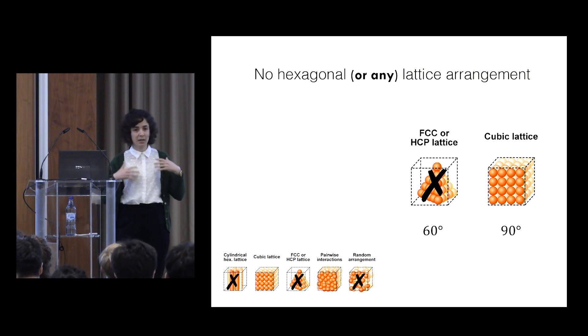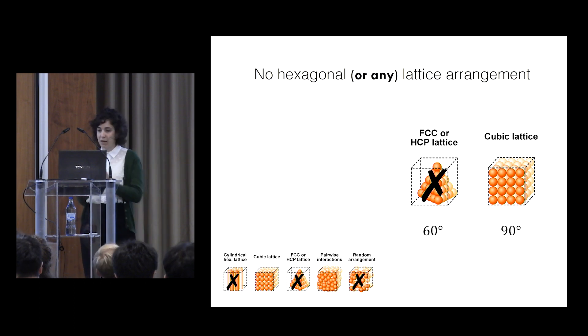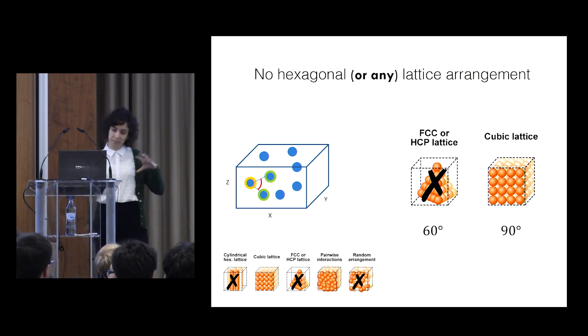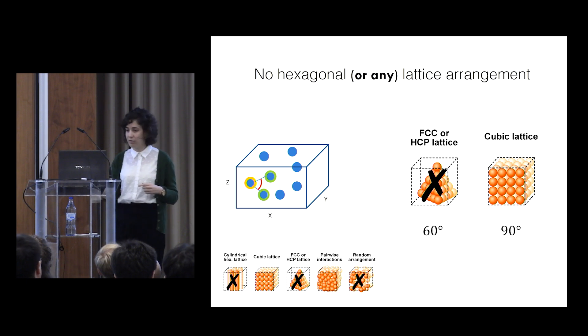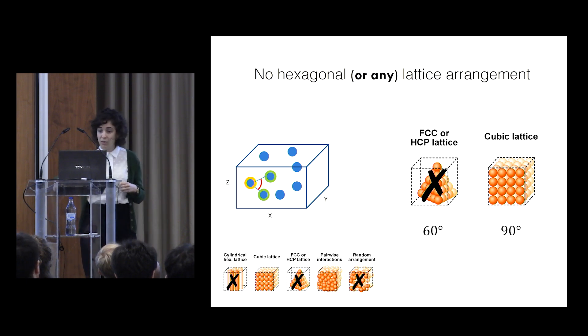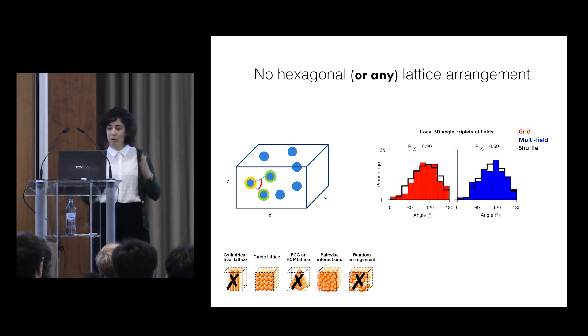So if I had a hexagonal lattice, I'll have a bias of 60 degrees. And if I had a cubic lattice, I'll have a bias of 90 degrees in local angles. And so we compute these local angles between triplets of neighboring fields,